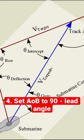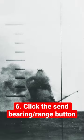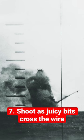4. Set AOB to 90, lead angle. 5. Point the periscope or TBT up the aiming bearing. 6. Click the send bearing/range button. 7. Shoot as juicy bits cross the wire.